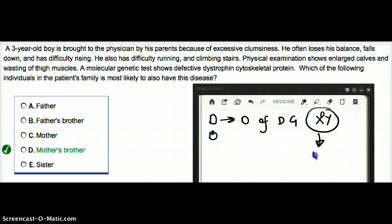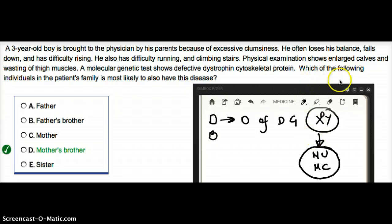So therefore, we are only going to see in maternal uncle or maternal cousin. These are the kind of people who are going to have Duchenne. Now the question is asking, which of the following individuals in the patient's family history is most likely to have this disease? It's going to be mother's brother, obvious.